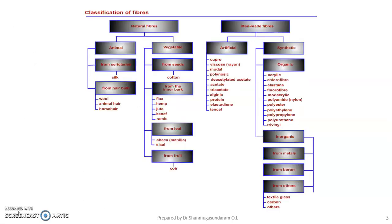Textile fibers are basically classified into two categories: natural fiber and manmade fiber. Under natural fiber, it is further classified into two categories: animal fiber and vegetable fiber.